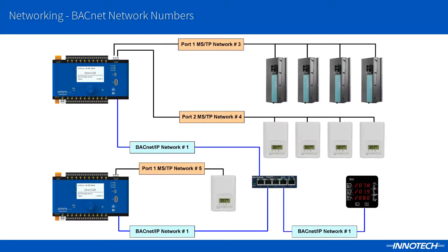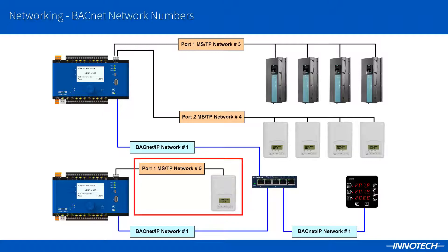Here I have added an MSTP device on the other Omni controller. Following the procedure, I have configured the new network segment as network number 5. This new MSTP device can then be discovered via the BACnet connection in ICOM.